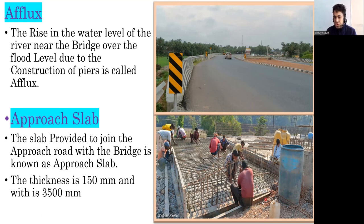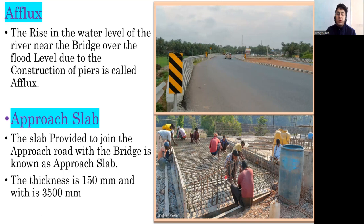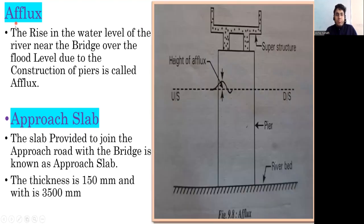The reason approach slabs are needed is that the soil behind the abutment is backfilled soil. Without a solid platform, the movement of heavy vehicles would cause settlement in that backfill. The approach slab provides a rigid surface so vehicles transition smoothly from the road onto the bridge without causing differential settlement.